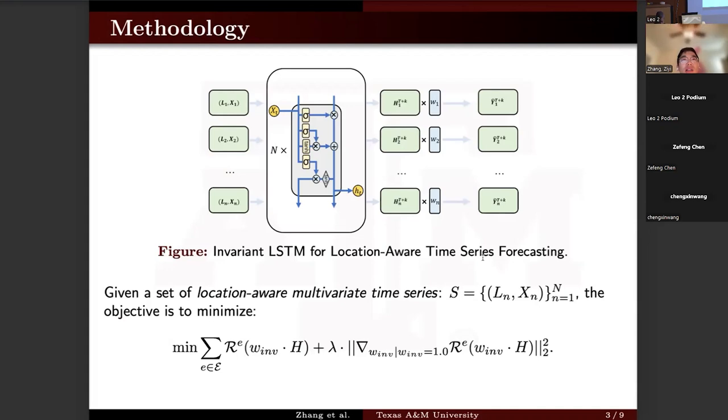The architecture is detailed in this figure. In the training process, we firstly need to separate the whole training set into n subsets based on the number of locations. For these n locations, we have a shared LSTM network and for each environment, we will get a representation h to record the historical temporal information.